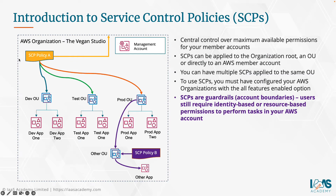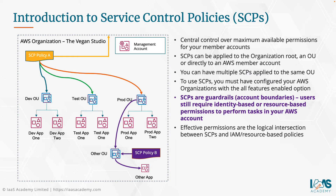As an example, if a service control policy allows Amazon S3 in DevApp 1, the users in DevApp 1 will still need to have an identity policy or a resource-based policy that gives them access to Amazon S3. If they don't have that permission as an identity policy or resource-based policy, then regardless of the fact that the service control policy allows that service, that user will not be able to consume the service. The effective permissions are the logical intersection between the service control policy and the IAM or resource-based policies in that account.